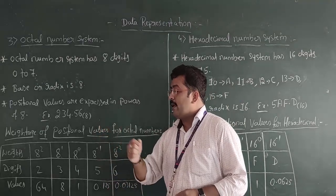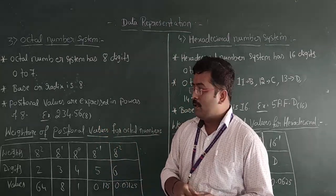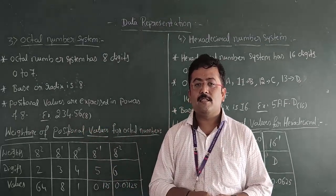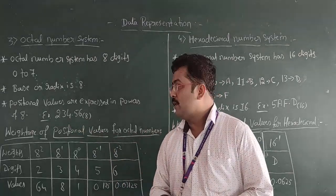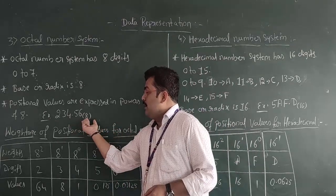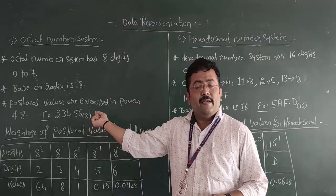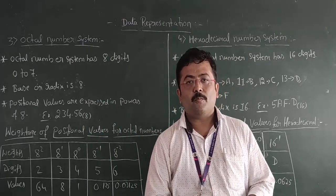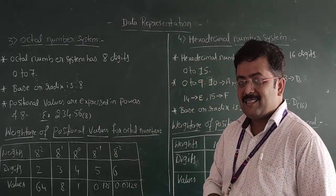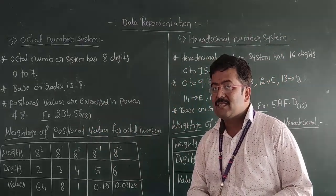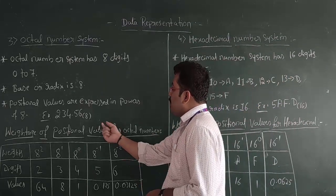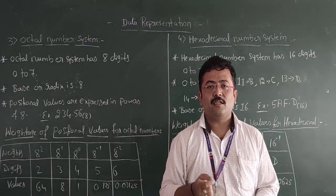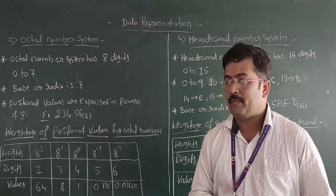So let us take an example: 234.56 to the base 8. We read it as 234.56 to the base 8, because the base value is 8 — 8 is nothing but the octal number system.